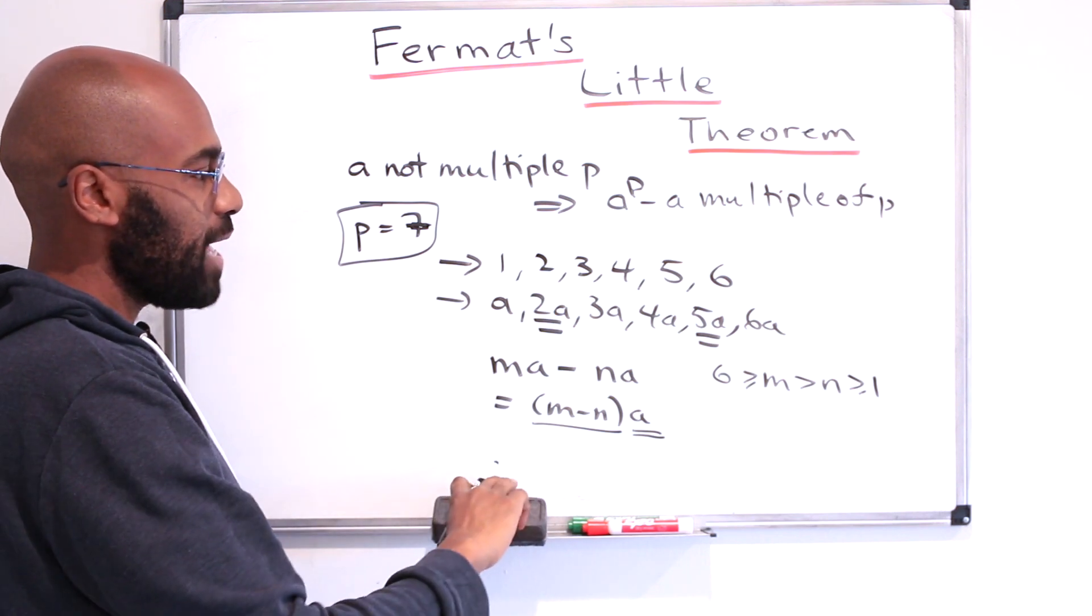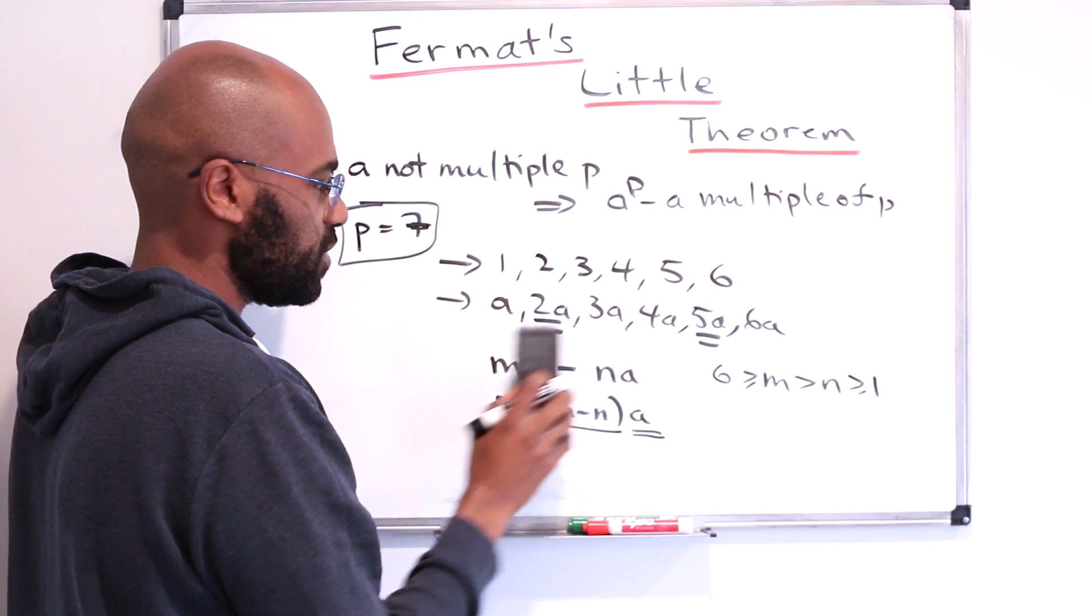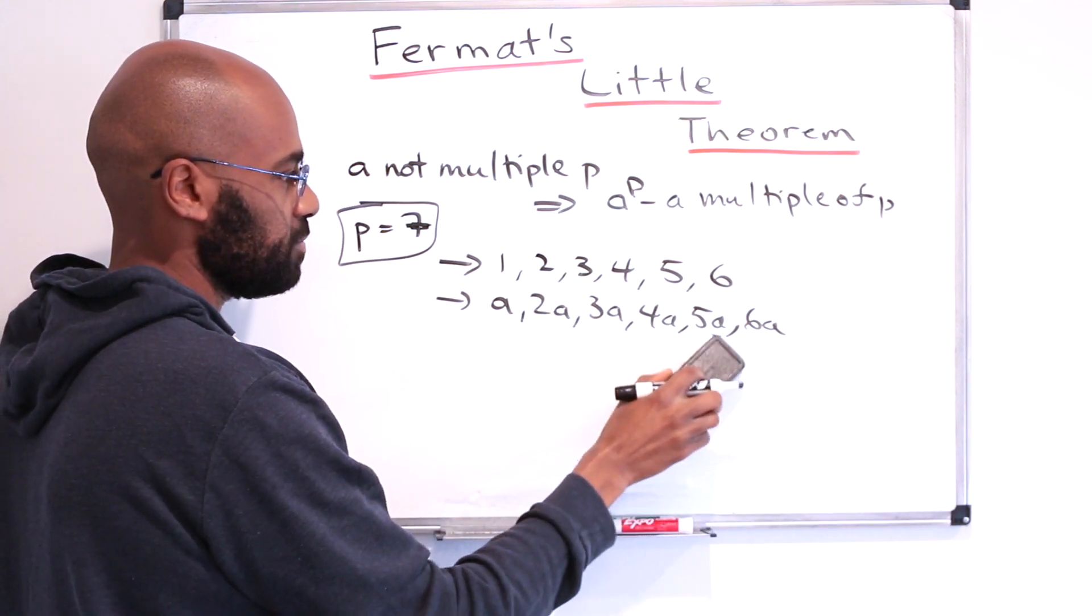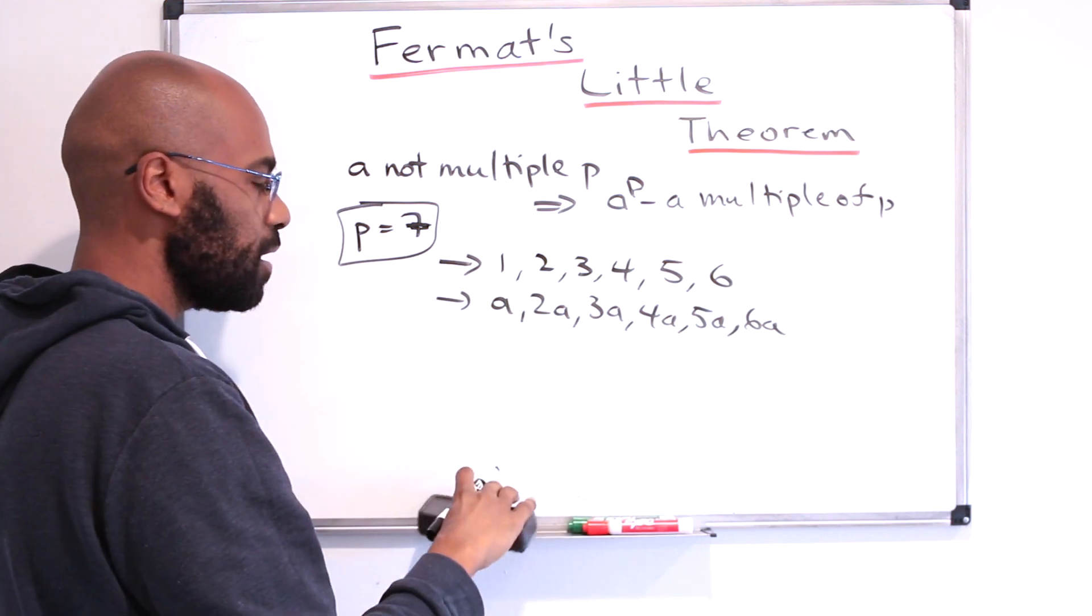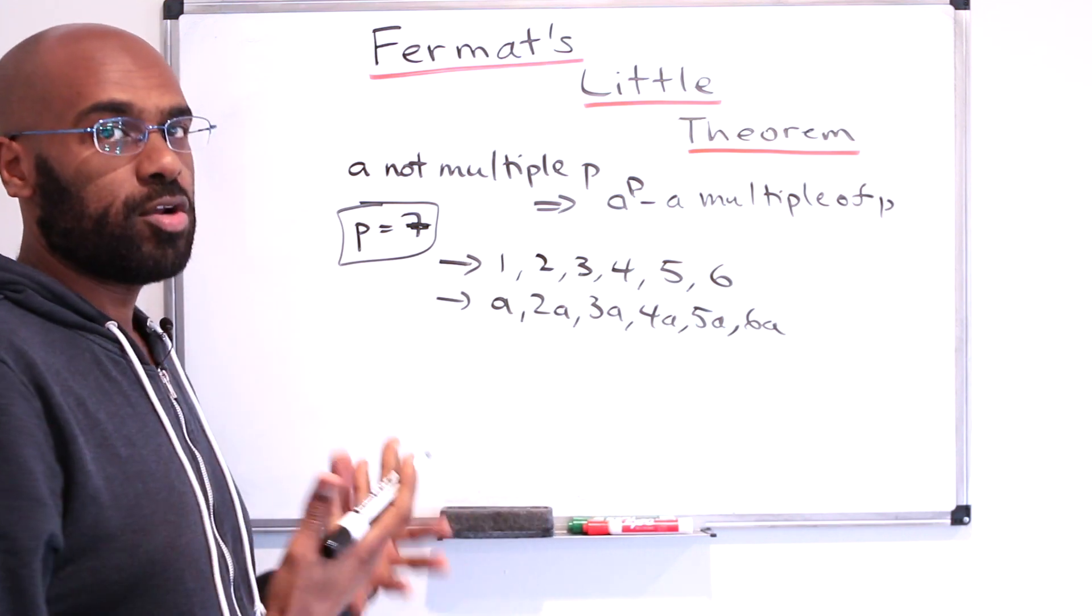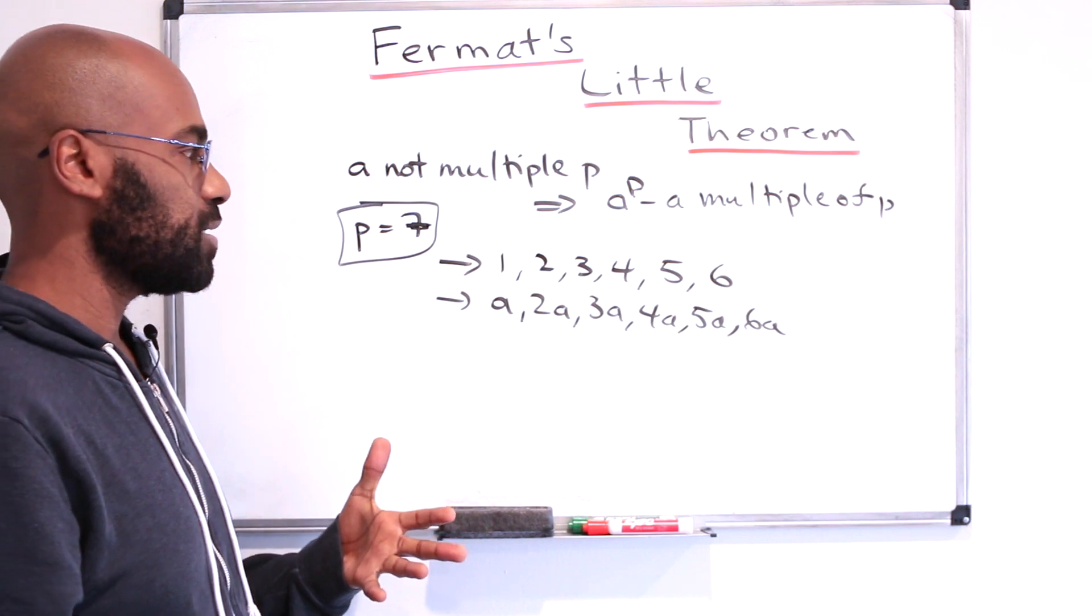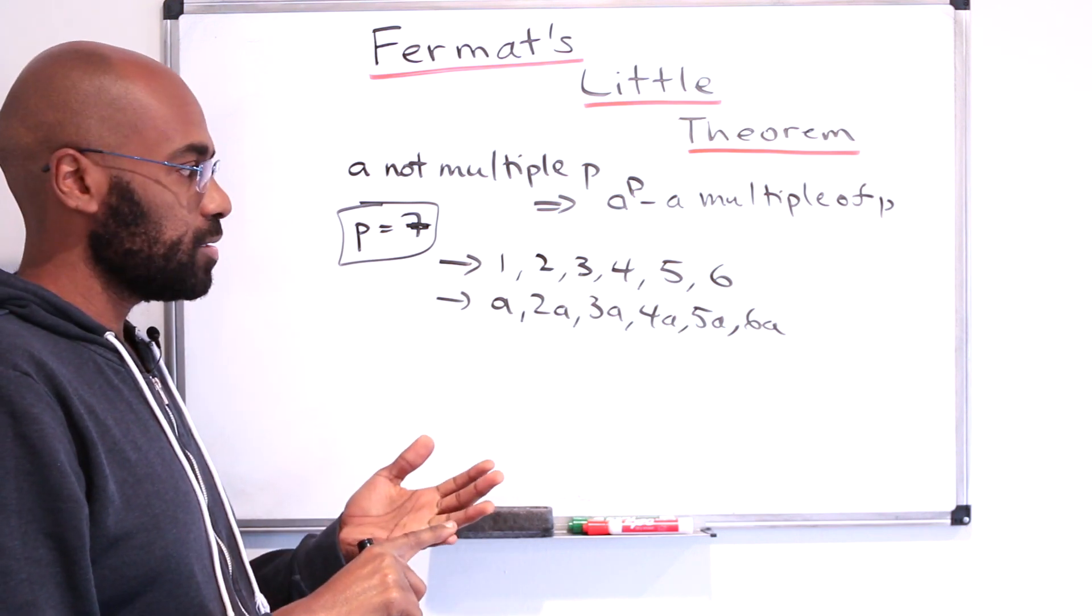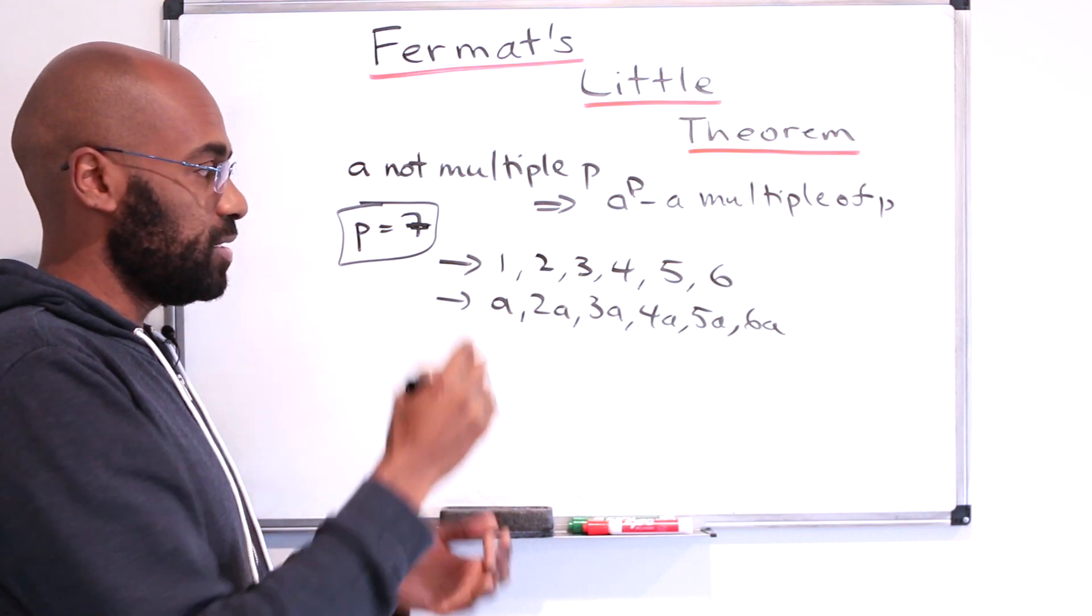So that means that all of these numbers leave different remainders when we divide by 7. But the possible remainders that they could possibly even leave in the first place are the numbers 1, 2, 3, 4, 5, and 6, because none of them is divisible by 7.